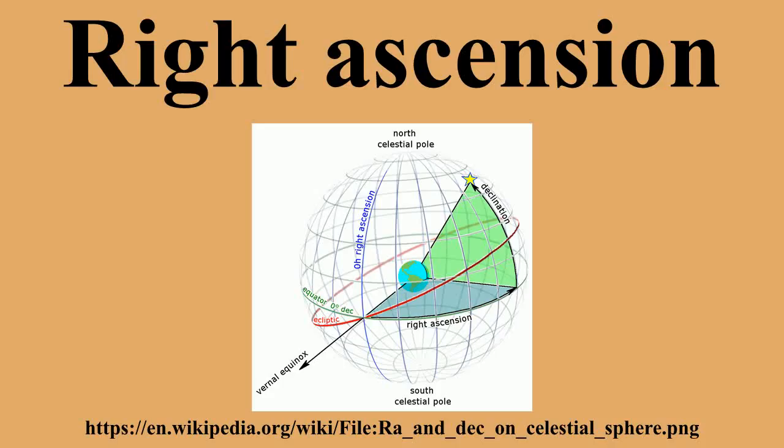Any units of angular measure could have been chosen for right ascension, but it is customarily measured in hours, minutes, and seconds, with 24 hours being equivalent to a full circle. Astronomers have chosen this unit to measure right ascension because they measure a star's location by timing its passage through the highest point in the sky as the Earth rotates.